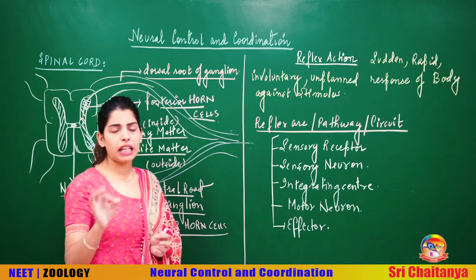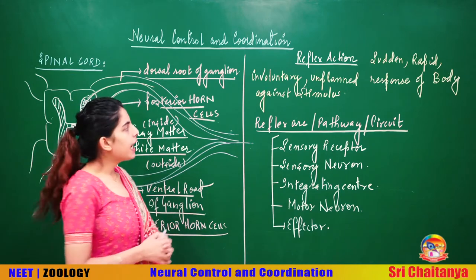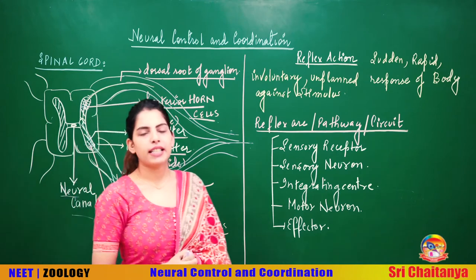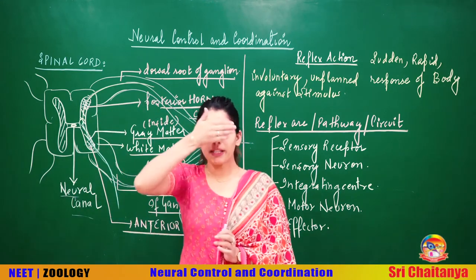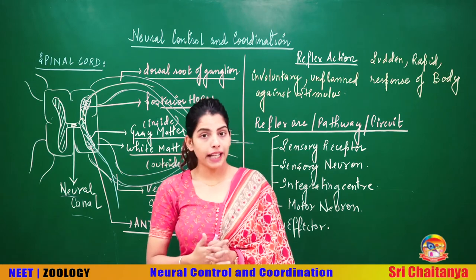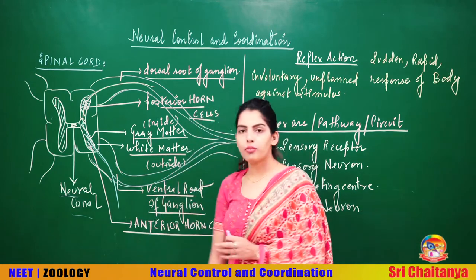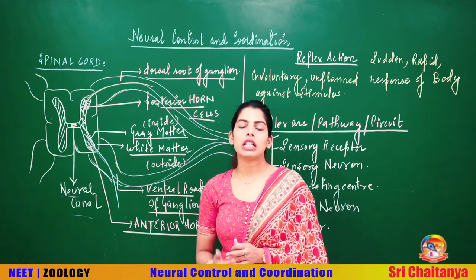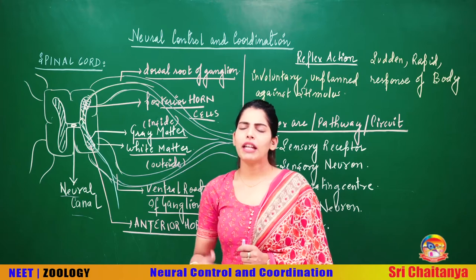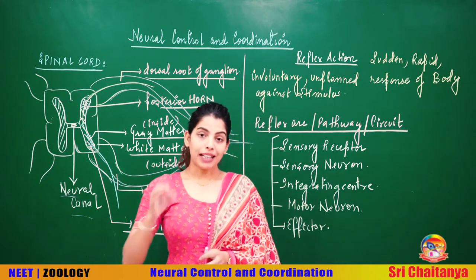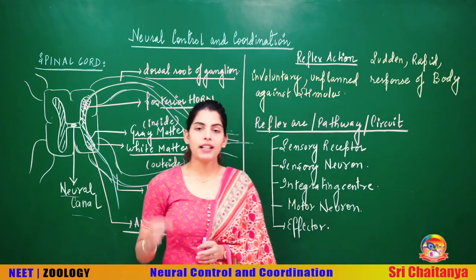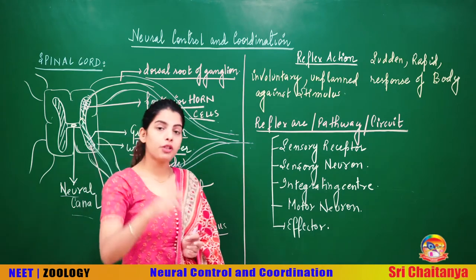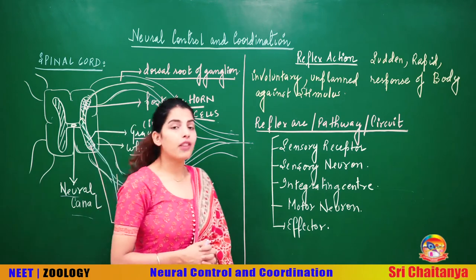A very important mechanism related with the spinal cord is reflex action. Since childhood we know what is reflex action — if someone brings their hand in front of my eye, or suddenly I touch a hot object, I am definitely going to show some involuntary, quick, rapid, very fast, unplanned action. That type of quick, rapid, unplanned, fast action is called an involuntary action — called reflex action.